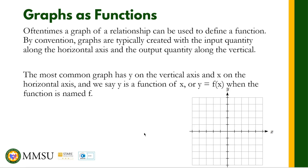We say y is a function of x, or y equals f of x, when the function is named f. So the horizontal axis is the x or the input quantity, and the vertical axis is the y or the output quantity.